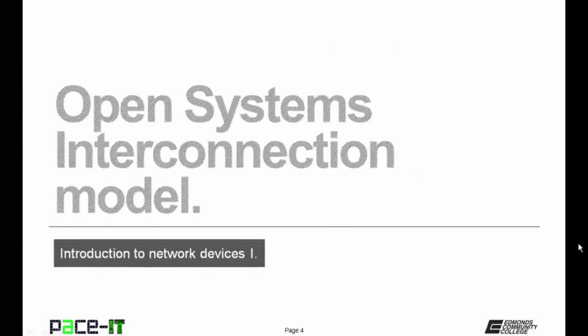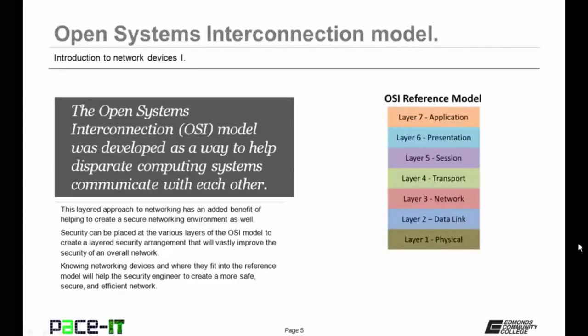The Open Systems Interconnection Model, or the OSI model, was developed as a way to help disparate computing systems communicate with each other. It created a seven-layer approach to networking. This layered approach not only allows those disparate systems to communicate with each other, but it has the added benefit of helping to create a secure networking environment. Security can be placed at the various levels of the OSI model to create a layered security arrangement that will vastly improve the security of an overall network. Knowing networking devices and where they fit into the reference model will help the security engineer to create a more safe, secure, and efficient network.